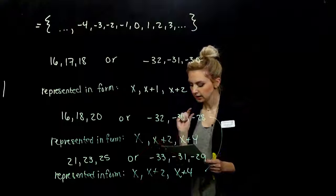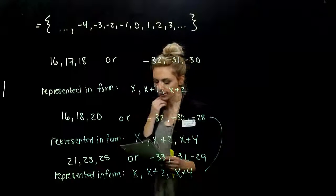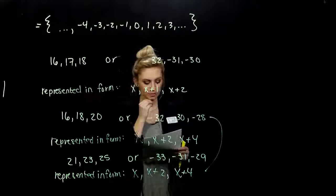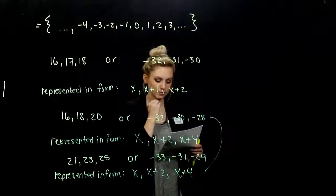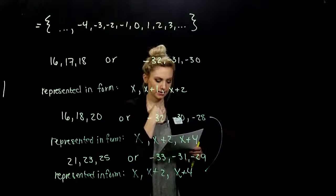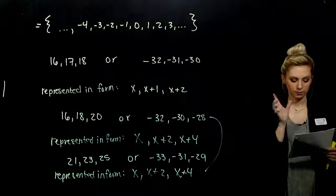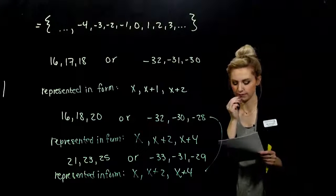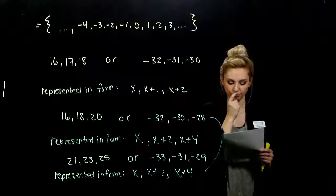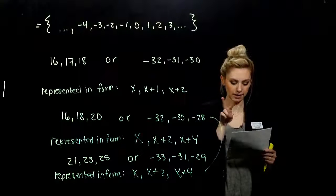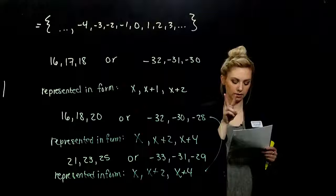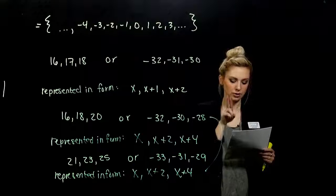Two consecutive limited edition prints are at a garage sale. They come from a 150 limited edition print. The sum of the two numbers is 217. We want to figure out, find the numbers of the prints. So what do we know? They're consecutive. And the sum of those two is 217.